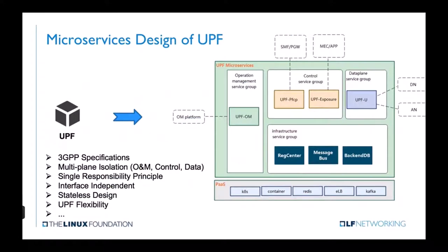This picture describes our micro-service design of UPF. We separate the monolithic UPF into four parts. The green one on the left side is UPF-OM, which is responsible for operation and management. The orange modules are UPF-PFCP and UPF-Explorer. UPF-PFCP communicates with SMF, representing the N4 interface. UPF-Explorer communicates with the mobile edge computing platform, responsible for communicating with edge UPF or the open capability interface.